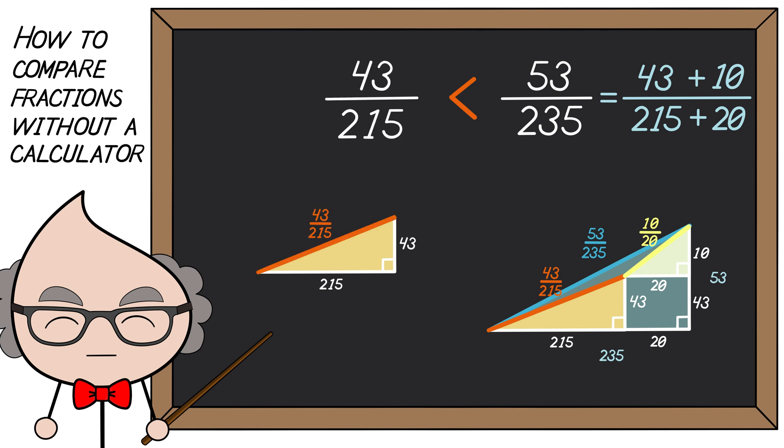In case you're bad at drawing, all you have to do is notice that 1 over 2 is obviously much bigger than 43 over 215. And because of this, we know that the slope of the second triangle we drew has a steeper slope than the one created by the first fraction.